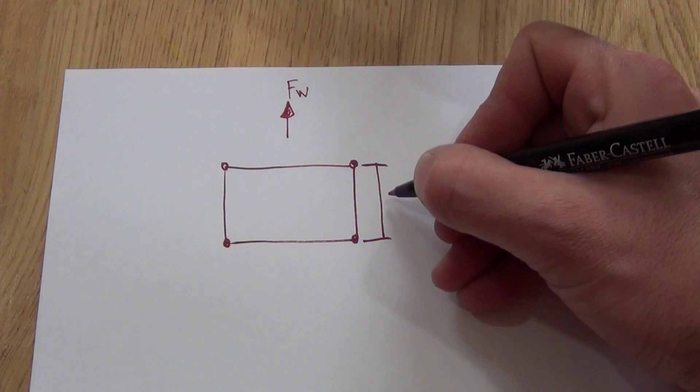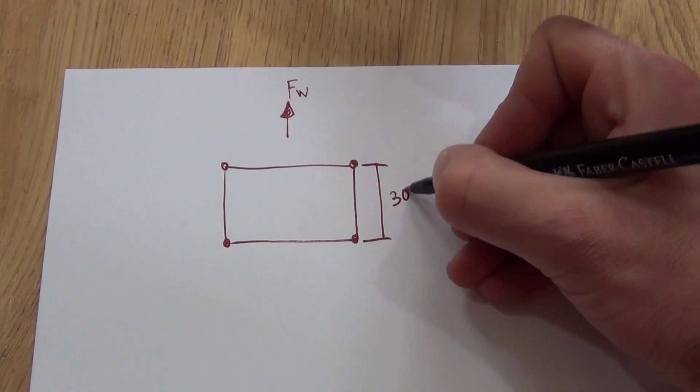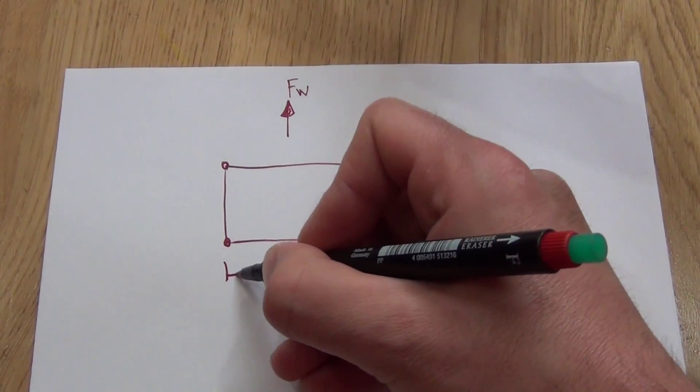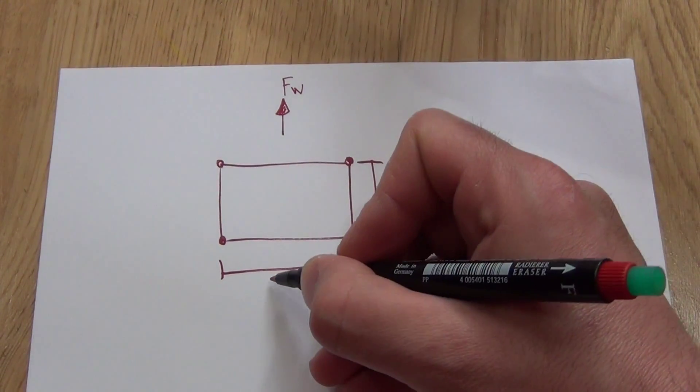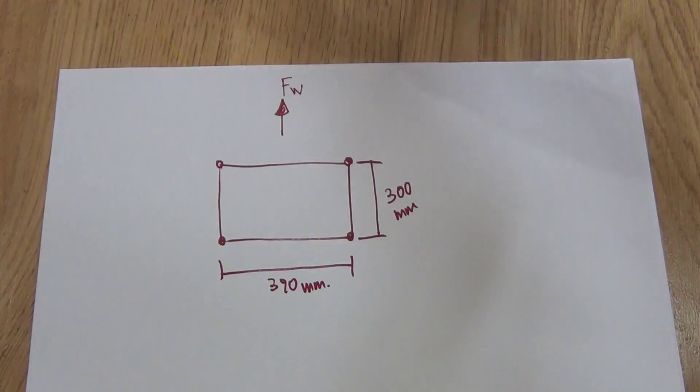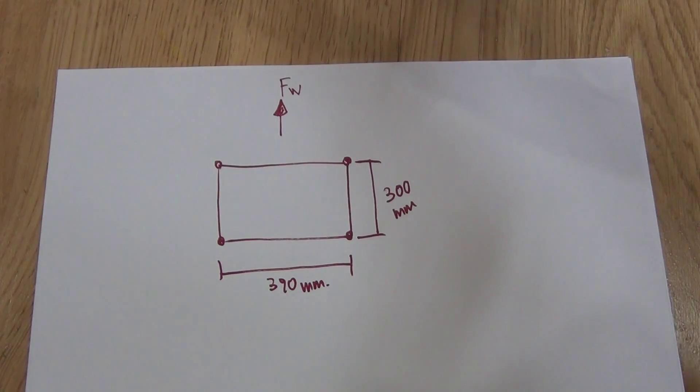So in my case, if I have this rectangle, this is 300 millimeter, and this is 390, okay. So that's the main dimensions that you can easily find out in your quadcopter, in case it is a quadcopter.